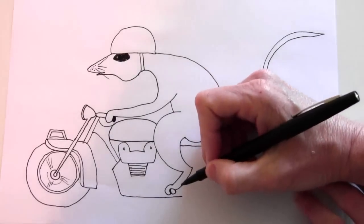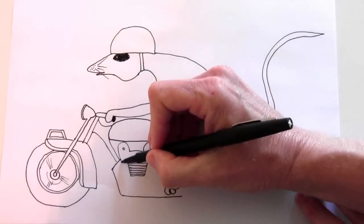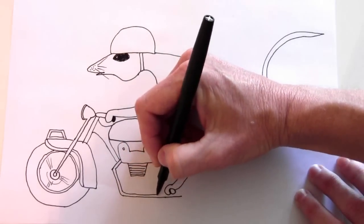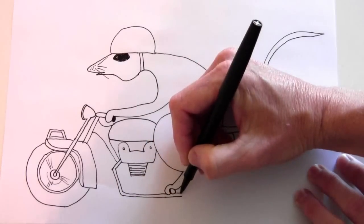You can draw a circle right here for the peg that his foot's on and draw the other side of the pipe like that.